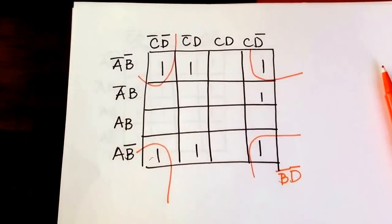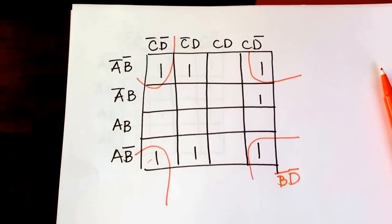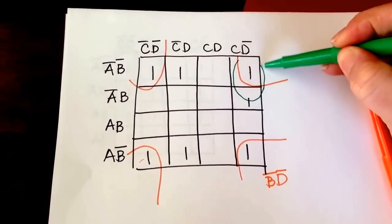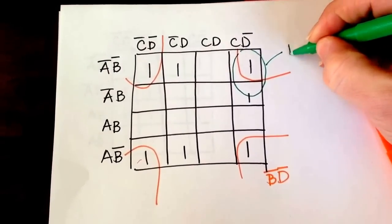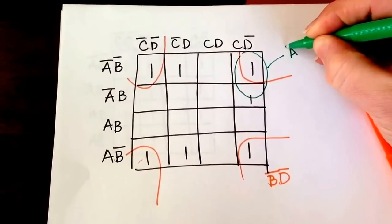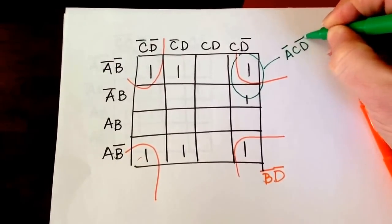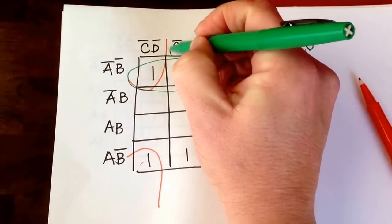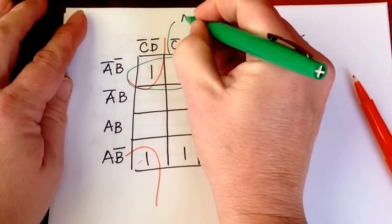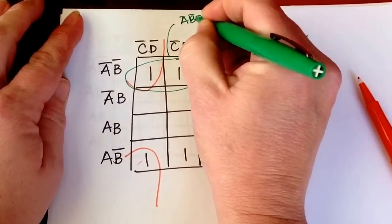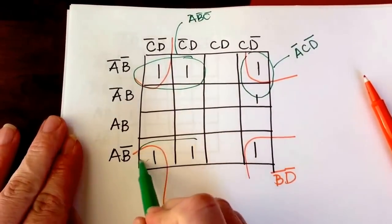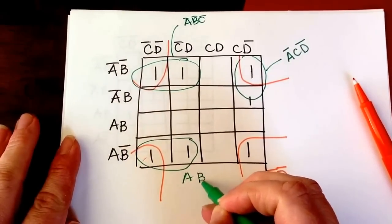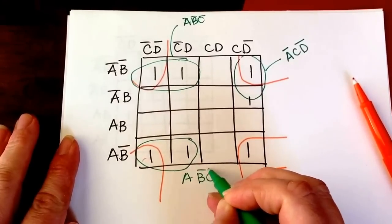Now let's look at, I have those ones now, and I need to enclose them in groups. So I'll do this pair, and that would be not A, C, not D. And then I'll do this group, and that would be not A, not B, not C. And then this group, which would be A, not B, not C.